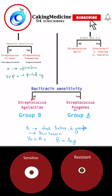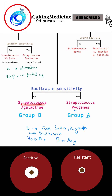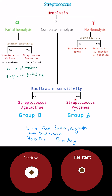Next is beta hemolysis, that is complete hemolysis, and we use bacitracin sensitivity. If it is not sensitive, then it is Streptococcus agalactiae, that is Group B. If it is sensitive to bacitracin, then it is Streptococcus pyogenes, that is Group A.